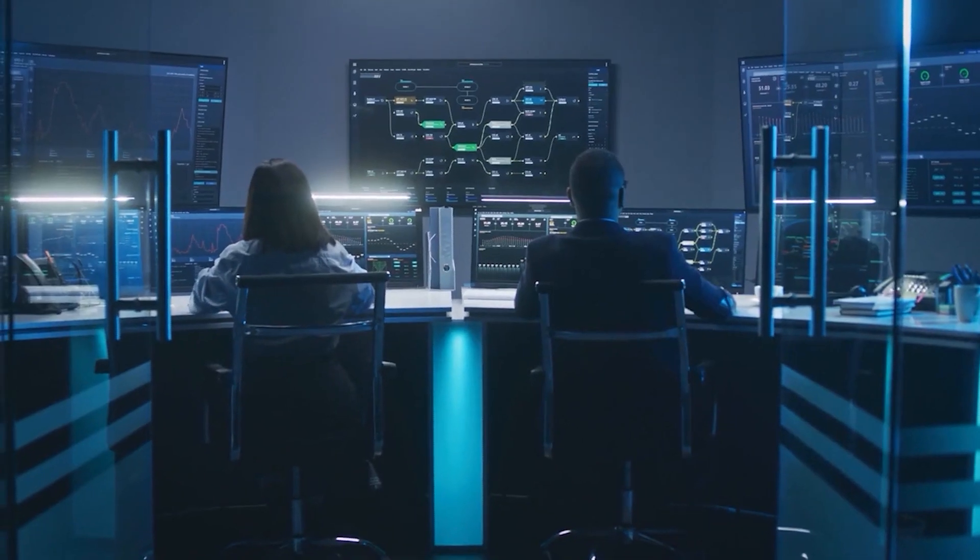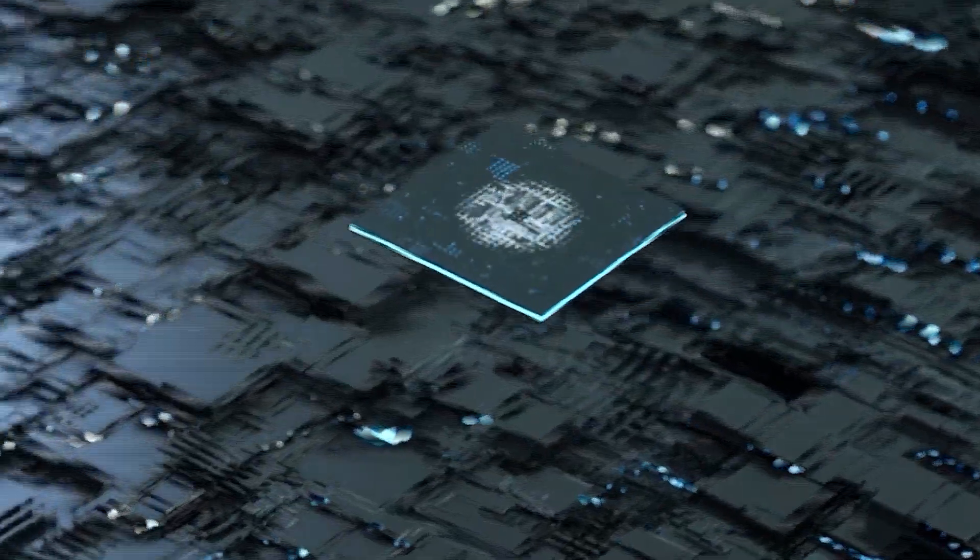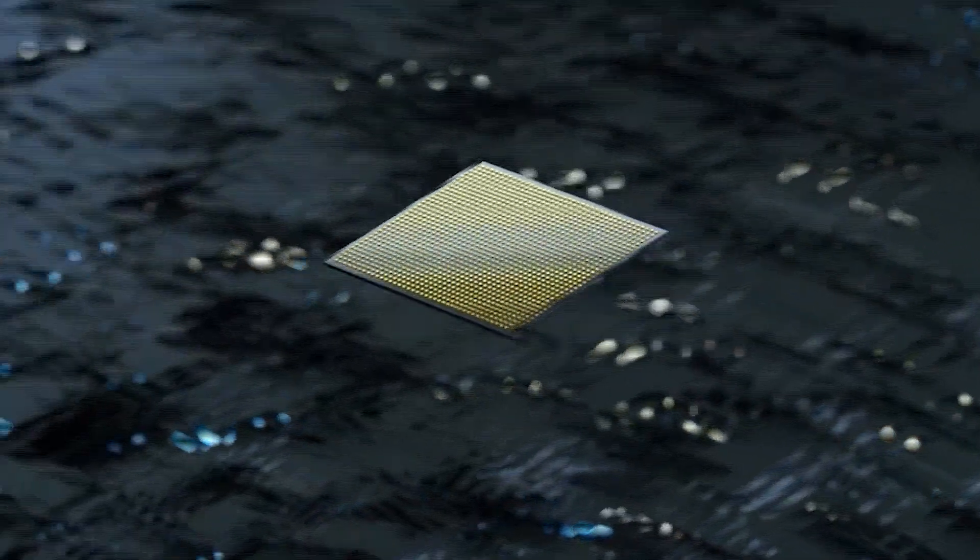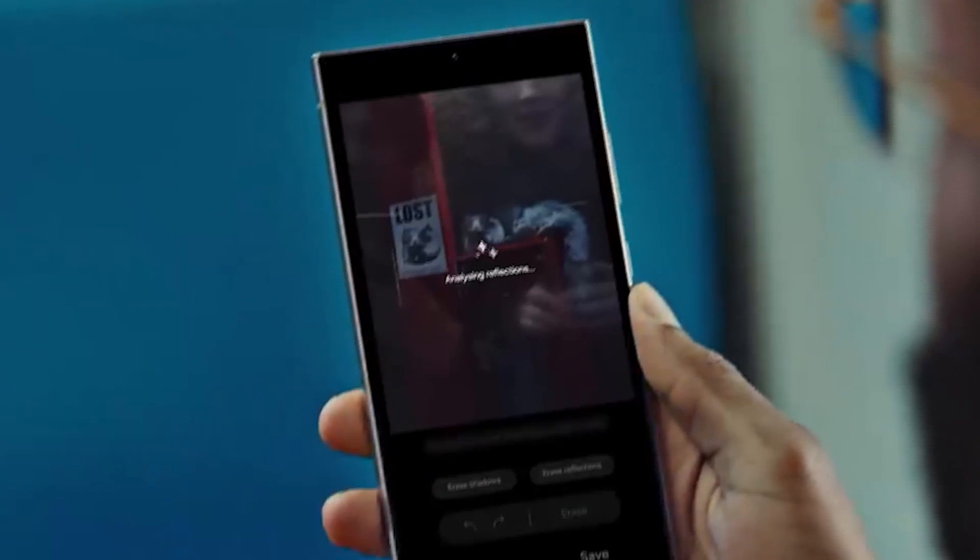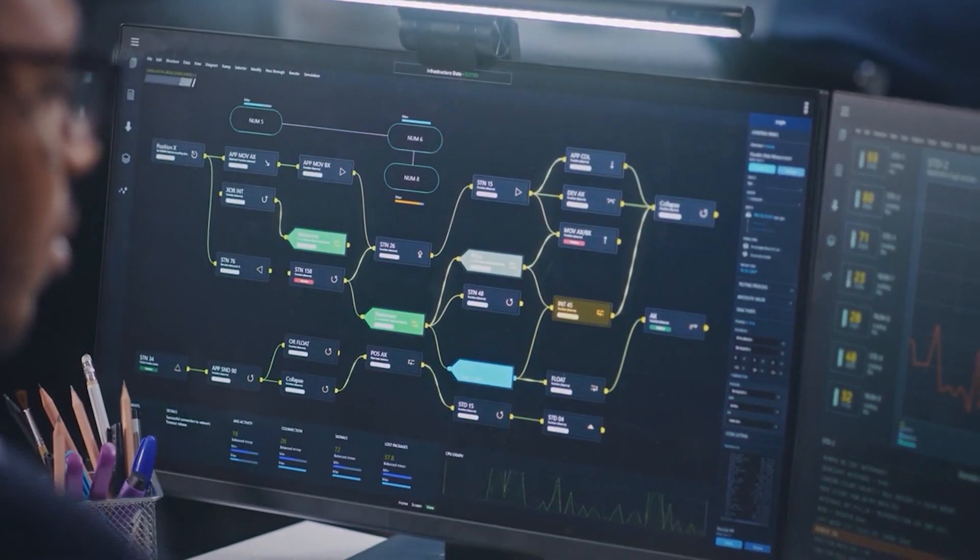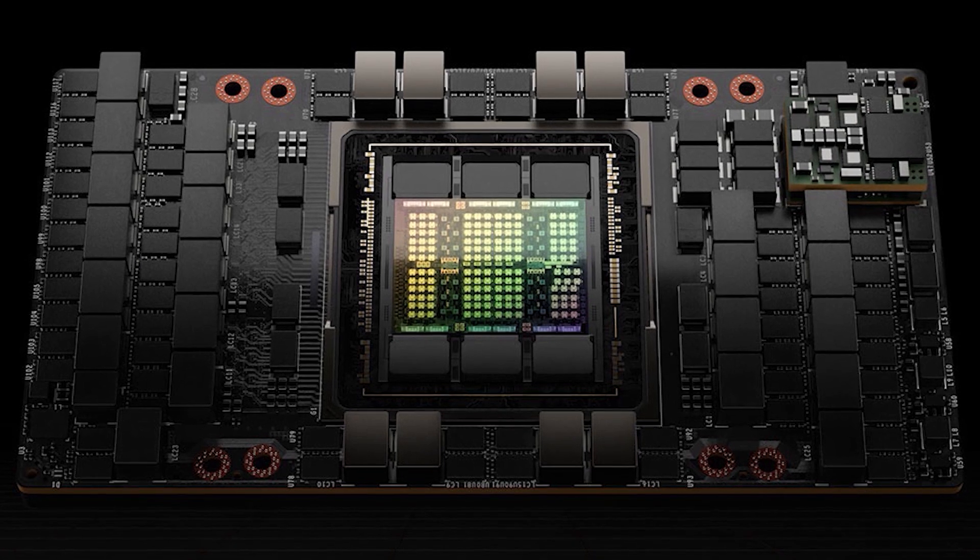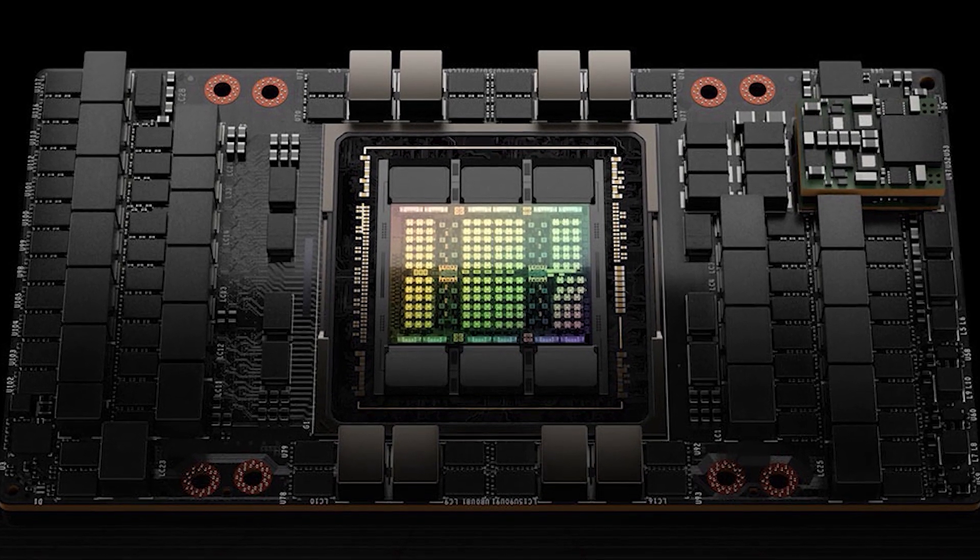Choosing between the two depends on the specific requirements of the task at hand. For projects prioritizing energy efficiency and cost-effectiveness, especially in portable or constrained environments, the C-Transformer could be the better choice. In contrast, for tasks that require the utmost computational power and speed, regardless of energy consumption, the H100 stands out as the preferred option.